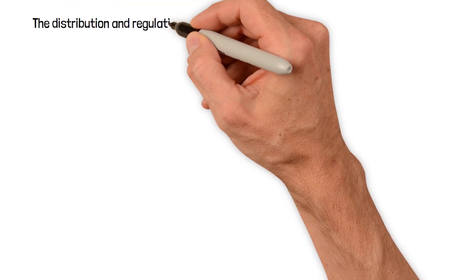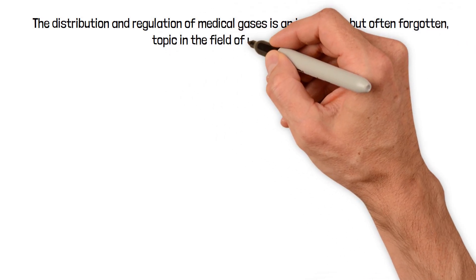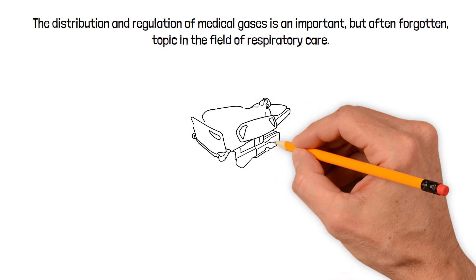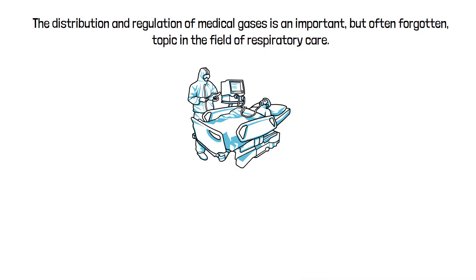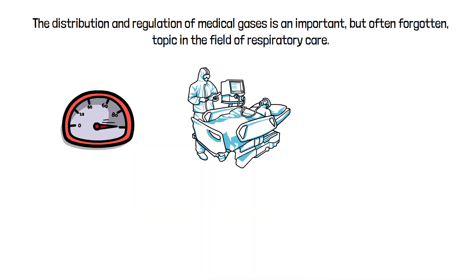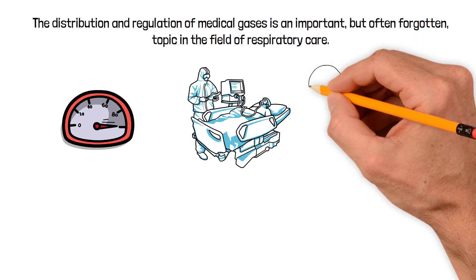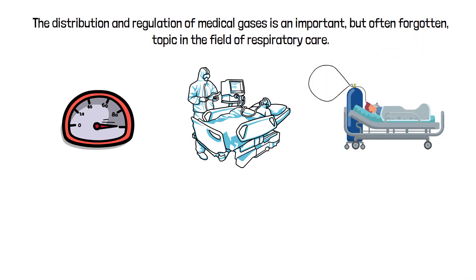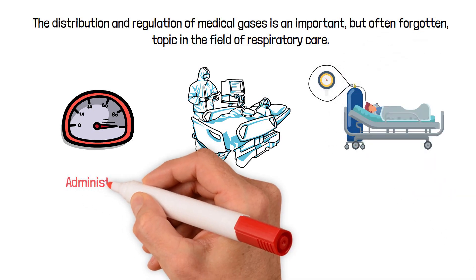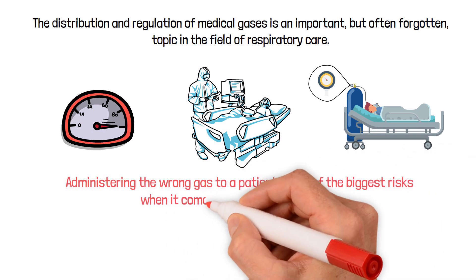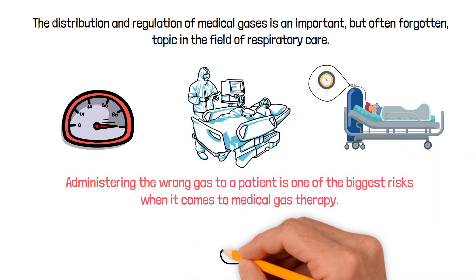The distribution and regulation of medical gases is an important but often forgotten topic in the field of respiratory care. In general, oxygen delivery systems store medical gases at extremely high pressures, so before a gas can be administered to a patient, the pressure must be reduced to a safe and workable level. Administering the wrong gas to a patient is one of the biggest risks when it comes to medical gas therapy.